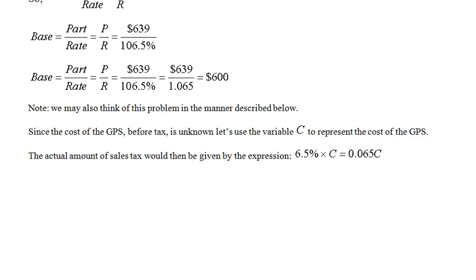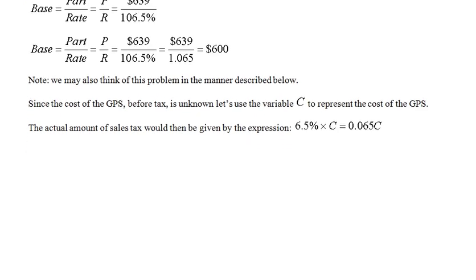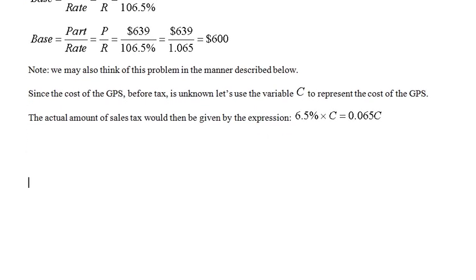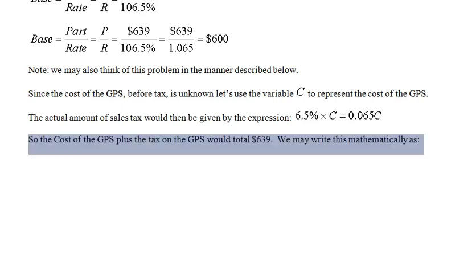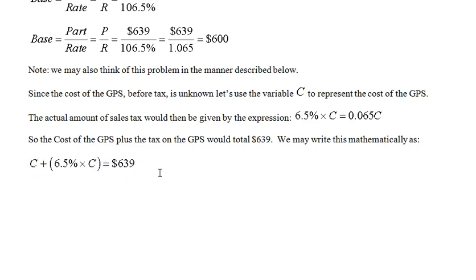As you probably know, anytime you go into a store and buy an item, sales tax has to be added on to the cost of the item. The way we get that sales tax is by taking a percentage of the actual sale price of the item. So in this case, the cost of the GPS plus tax on the GPS would total $639. We may write this mathematically as C plus 6.5% times C equals $639.